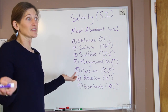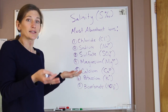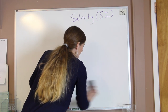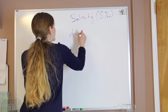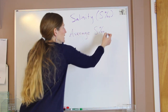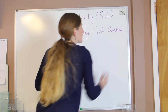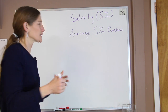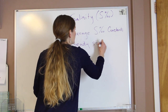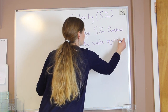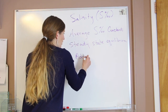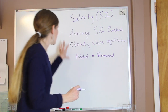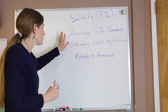You might easily think that if ions are constantly being added into the oceans, our oceans must be getting saltier over time — but that's not the case. Instead, what we find is that our average salinity over time is constant. The ratio of those different ions in relationship to each other stays constant over time. We have what's called a steady state equilibrium, which means the amount added in on average equals the amount removed, leaving us with a constant average global salinity of 35 parts per thousand.